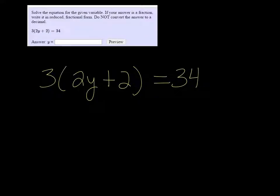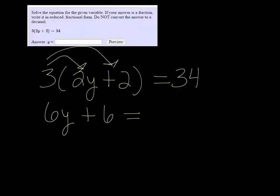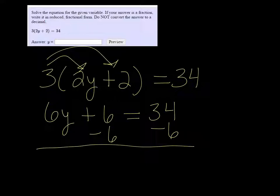So we need to distribute that 3 to what's inside the parentheses. We get 6y plus 6 equals 34. Subtract the 6 on both sides to get the y by itself, so we get 6y equals 28.